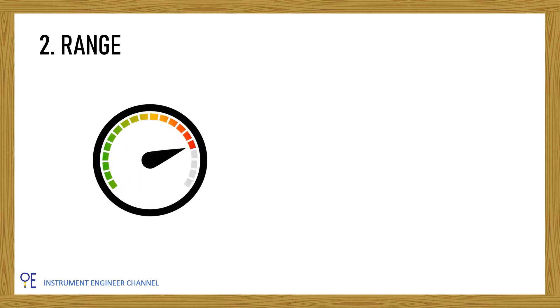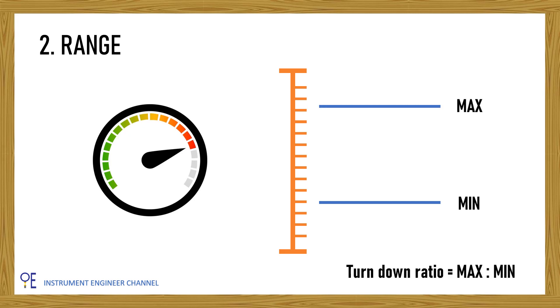The second factor is the range. Range of process variable to be measured shall be specified initially. The wide range will require instrument type which has high turndown ratio. It means some type of instrument which has low turndown ratio will not be suitable.